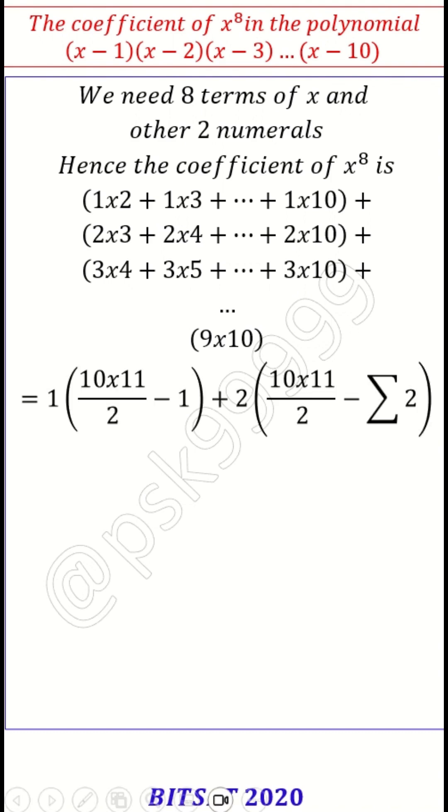If you want to simplify in a mathematical way, you can do this way. If I add 1 to this one, this is nothing but sum of 10 integers which is 10 into 11 by 2 minus 1, because I added 1 I am subtracting 1.